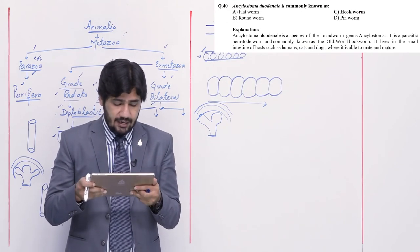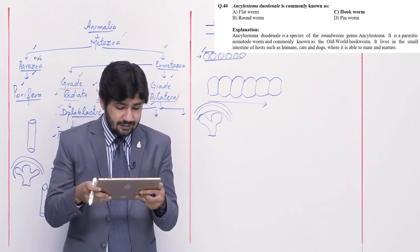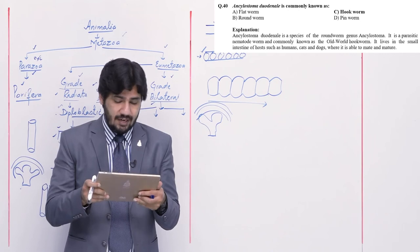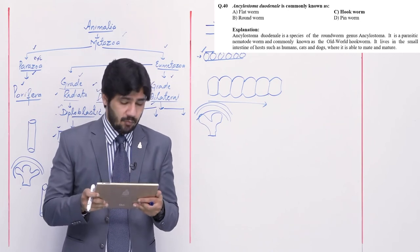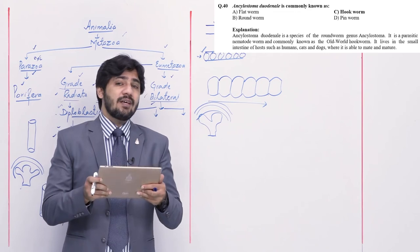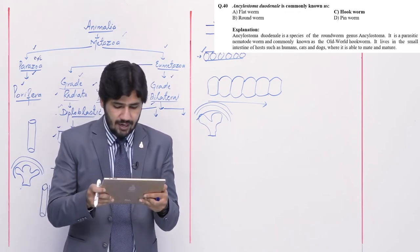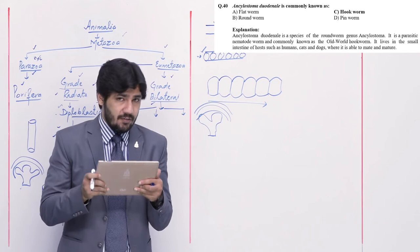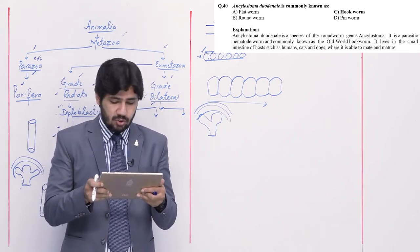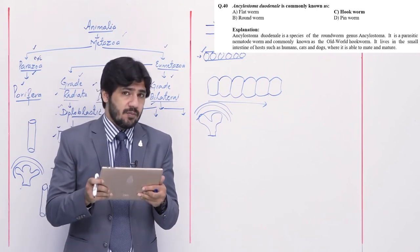Question number 40: Ancylostoma duodenale is commonly known as — alpha flatworm, beta roundworm, charlie hookworm, and delta pinworm. It is commonly called hookworm — right option is charlie. Flatworm refers to Platyhelminthes, roundworm to nematodes, and pinworm to Enterobius vermicularis.